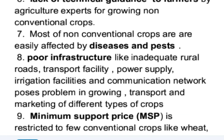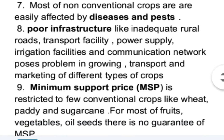Another factor is poor infrastructure, including inadequate rural roads, transport facility, power supply, irrigation facilities, and communication network. These also pose problems in growing, transporting, and marketing different types of crops.